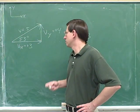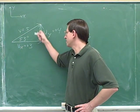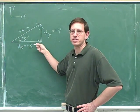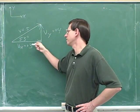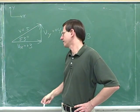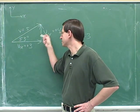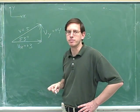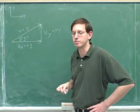Now you can see why it was so important to get the right arrows on the components. If we don't get the right arrows on the components, then we can't figure out the right sign on V sub x and V sub y.